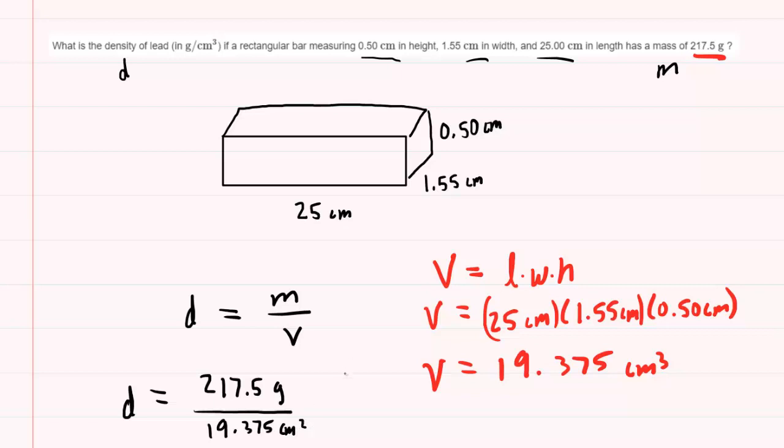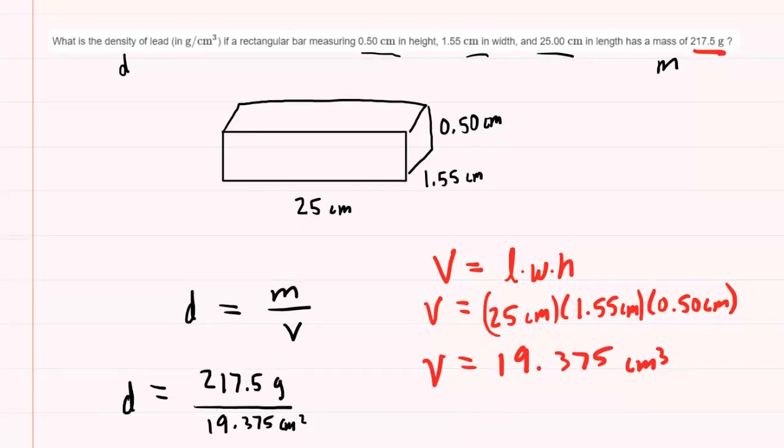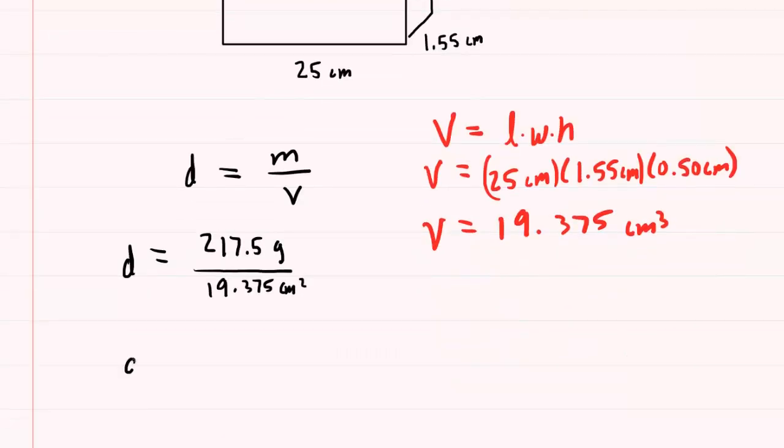And we're going to get a lengthy decimal here, but we'll end up rounding it to the correct number of significant figures. So 11.2258 and so on.